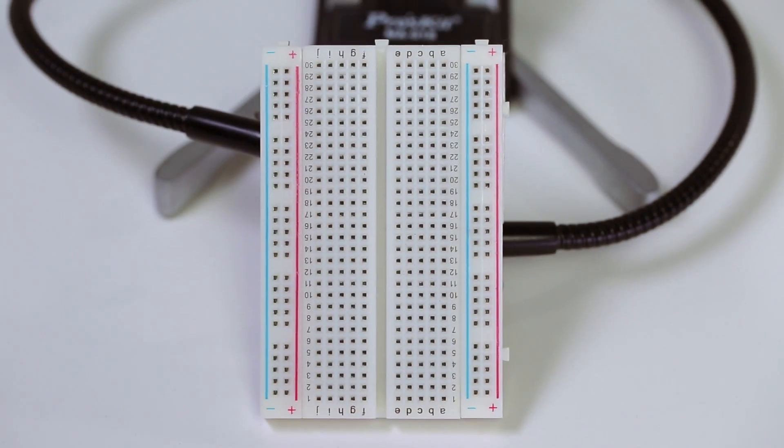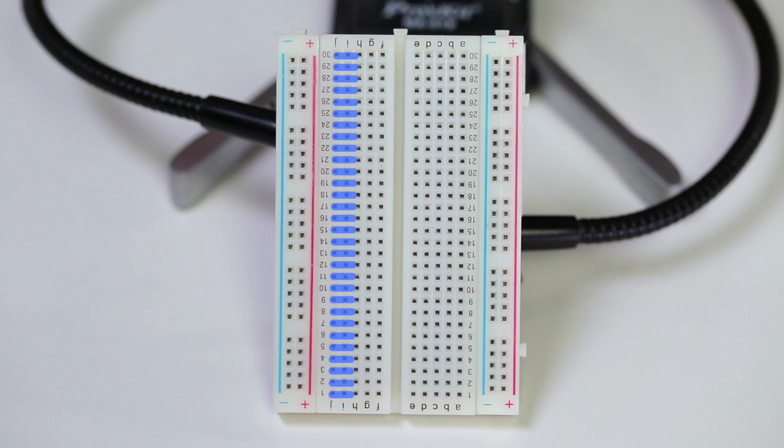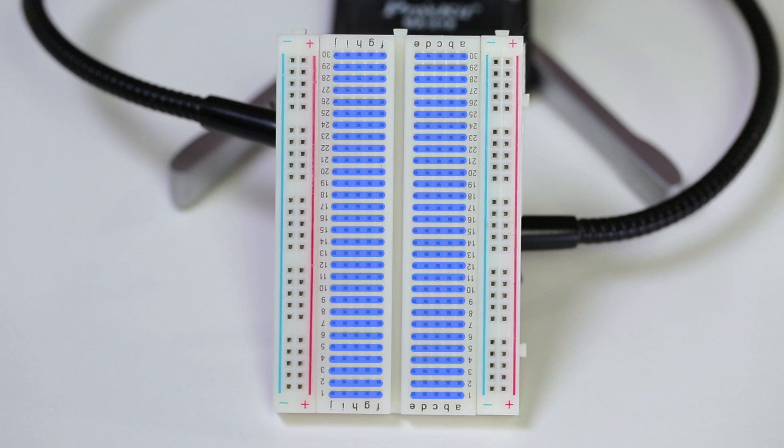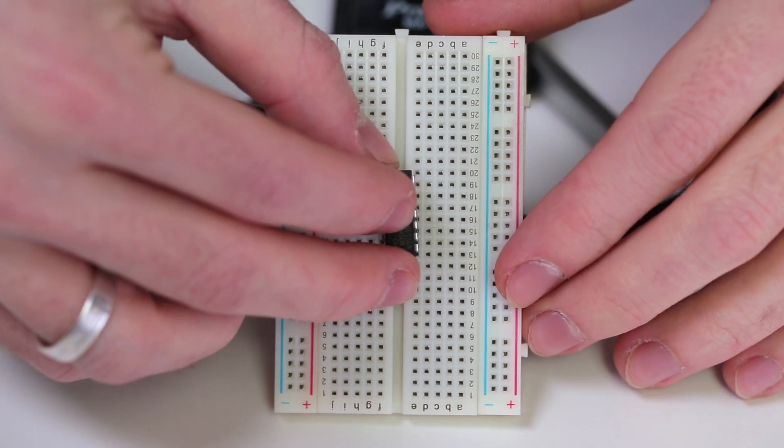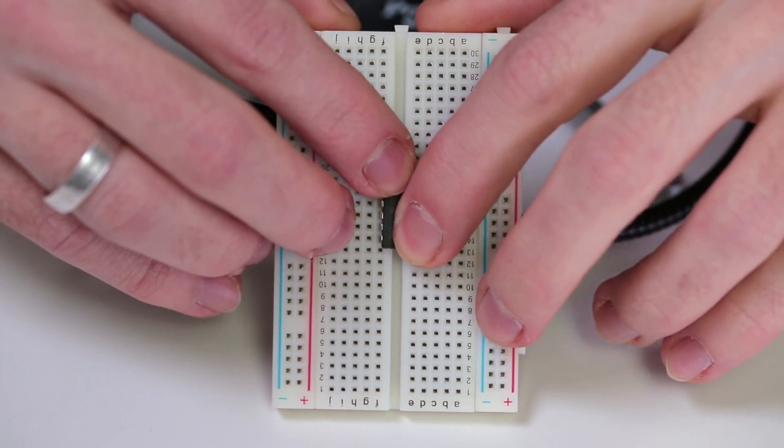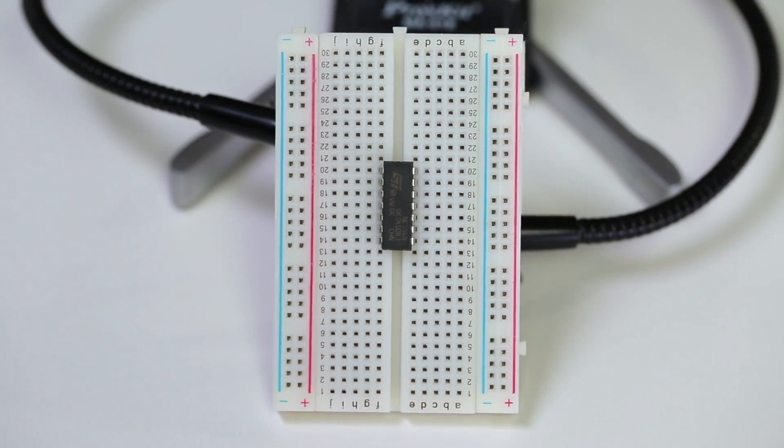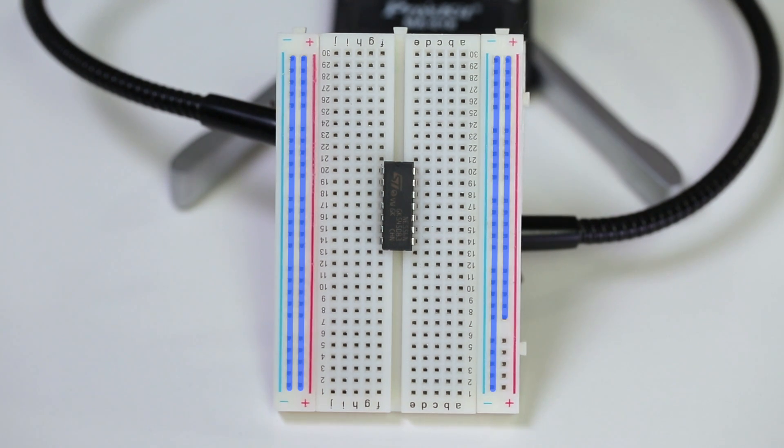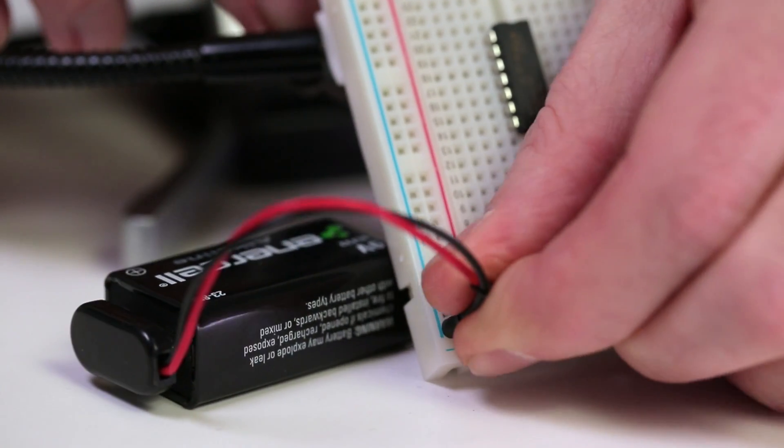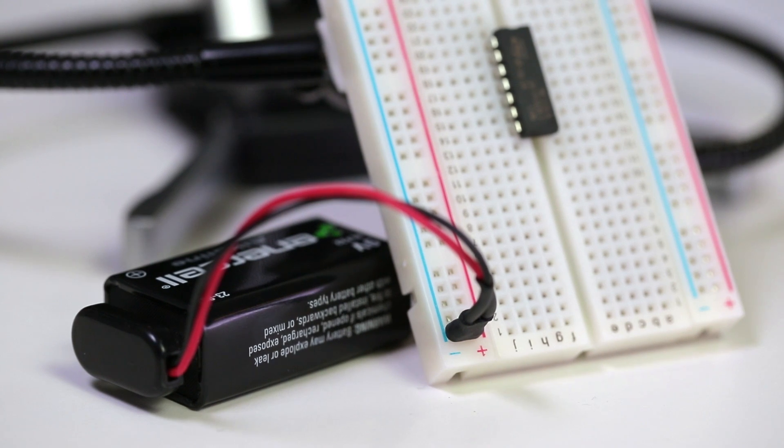When we place a component on a breadboard, we're essentially wiring it into one of those internally connected rows. The two inner columns connect components horizontally. And that split down the center makes it easy to place an IC on a breadboard while keeping its pins electrically isolated from one another. The two columns of holes along the sides are connected vertically.